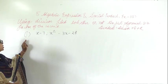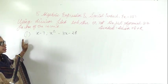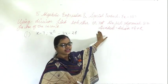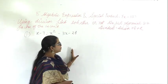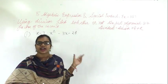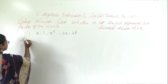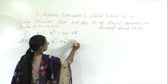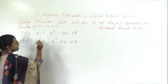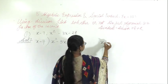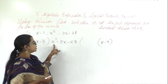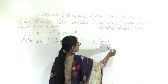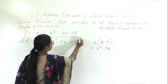Question number 9: using the division method, find whether or not the first polynomial is the factor of the second — first divide and then check. If you get the same answer, it is a factor. The problem is x squared minus 3x minus 28 divided by x minus 7. Here x minus 7 is the divisor. Multiply by x: x into x is x squared, and x into 7 gives 7x.